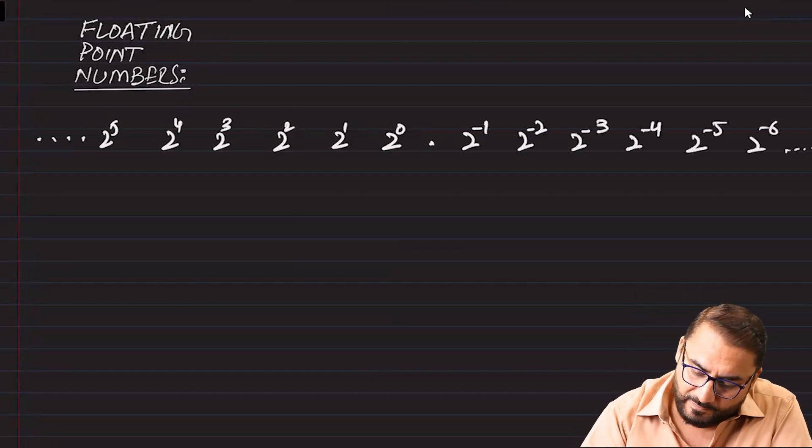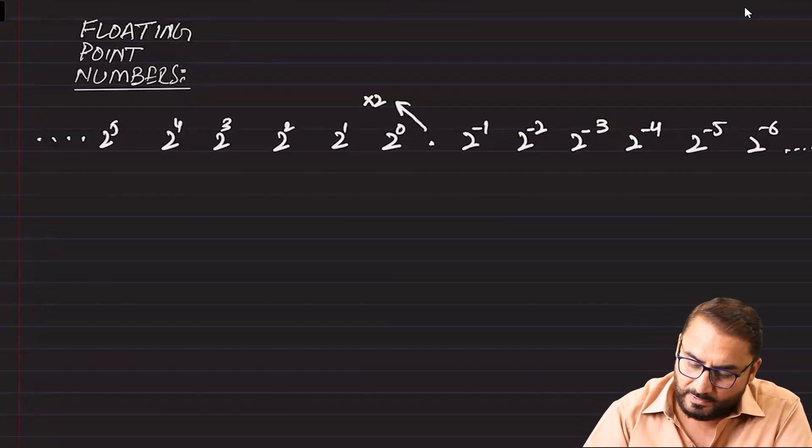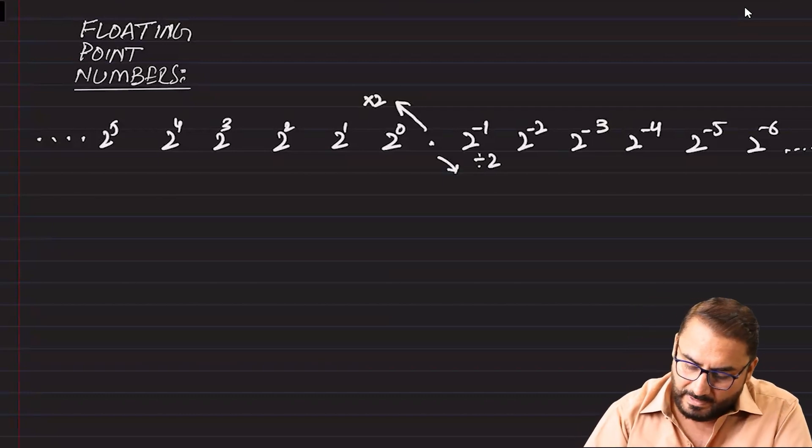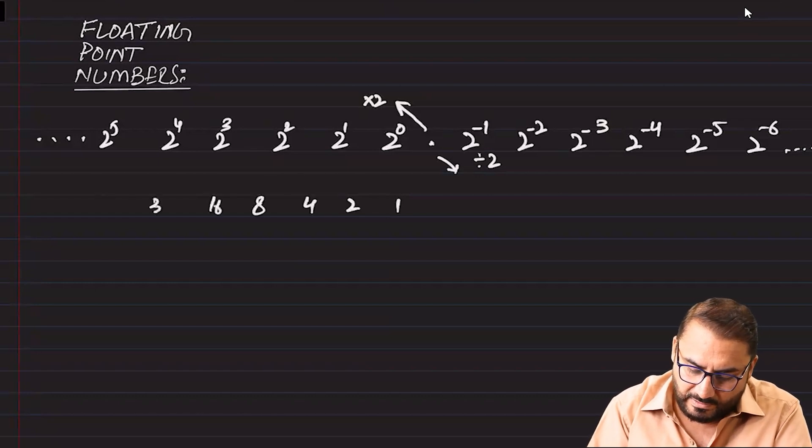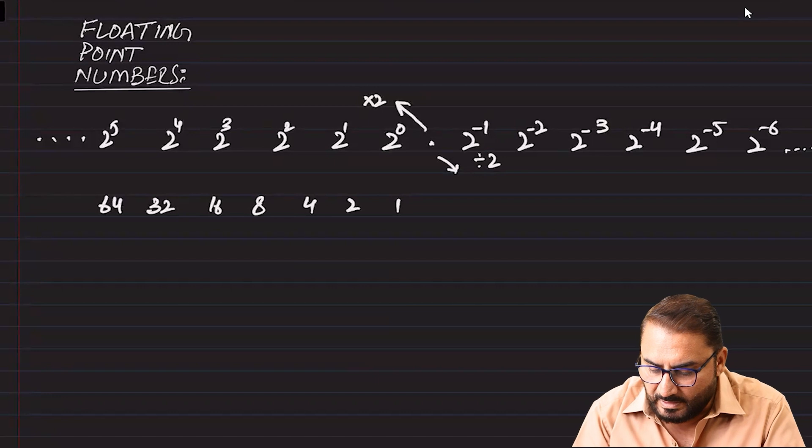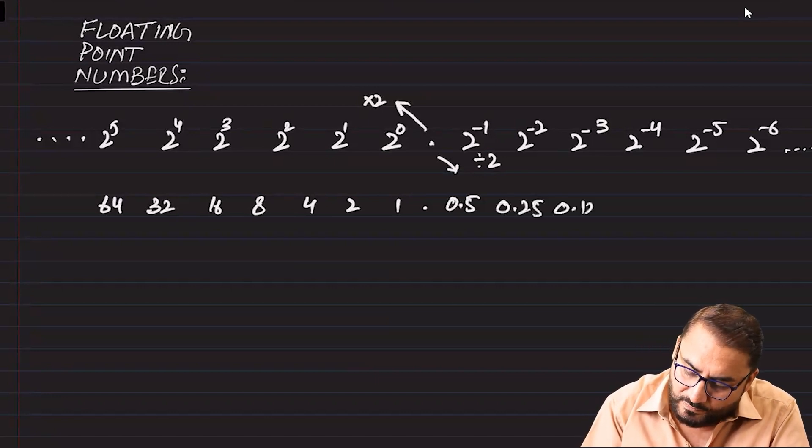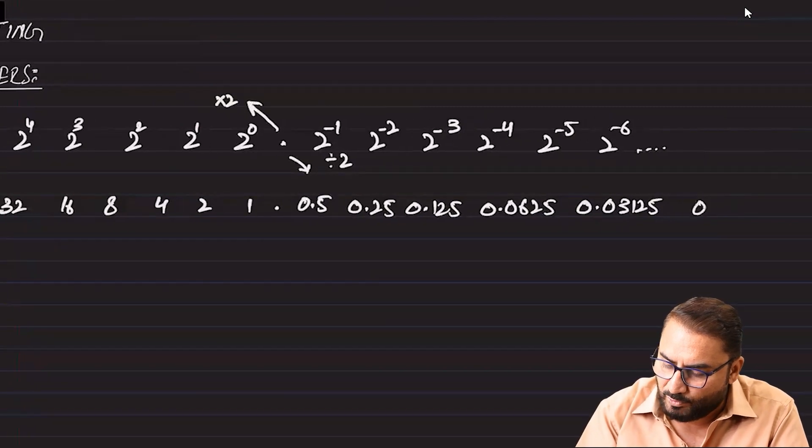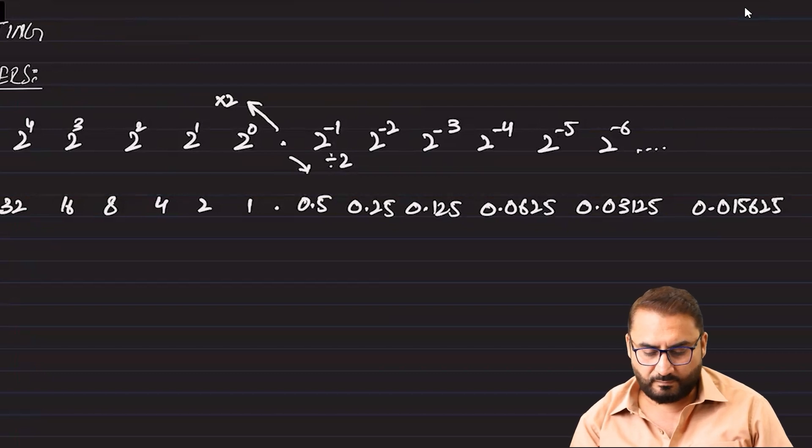So in a way if you see, over the left the number is being multiplied by 2 and over the right the number is being divided by 2. If we solve this, one becomes 1, 2, 4, 8, 16, 32, 64 and so on. And then we have got 0.5, 0.25, 0.125, 0.0625, 0.03125 and 0.015625. That is how we can convert these.